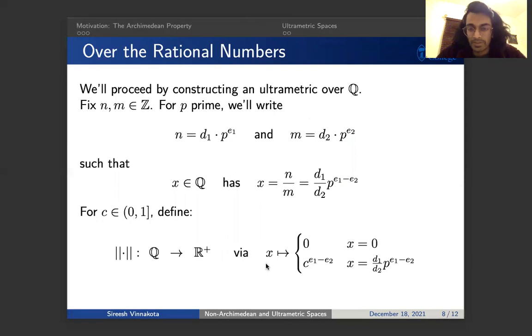So we're going to start with the rational numbers. This is a set that we're pretty confident and comfortable with. And for any rational number, you know, it's just a ratio of two integers. So we're going to pick those two integers to be N and M. And if you select a prime, we know that the integers are UFD, they're unique factorization domains.